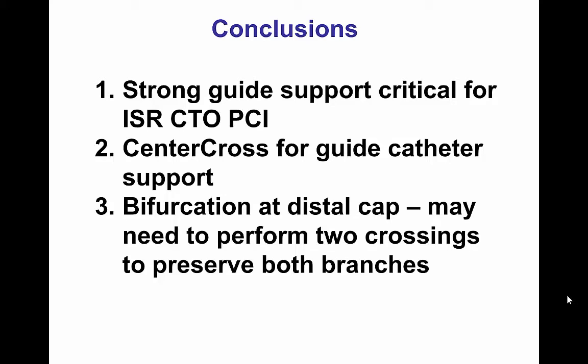The other important message from this case is that having a bifurcation on the distal cap may make canalization of both branches challenging, because canalizing one branch may lead to occlusion of the other. In this particular case, the wire went into the posterolateral branch and we had to perform retrograde crossing to restore flow in both the PDA and the posterolateral branch. A final result was achieved with flow in both branches.